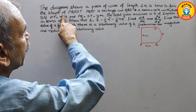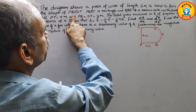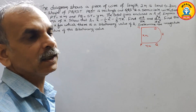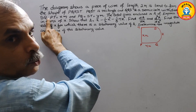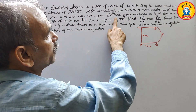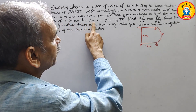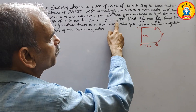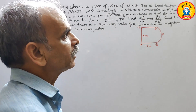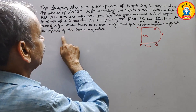The question states: a piece of wire of length 2 meters is bent to form the shape PQRST. PQST is a rectangle, QRS is a semicircle with diameter SQ. PT is equal to X meters, PQ is equal to ST is equal to Y meters. The total area enclosed is A square meters. Express Y in terms of X. Show that area equals X minus one-half X squared minus one-eighth pi X squared. Find dA/dx and d²A/dx². Find the value of X for which there is a stationary value of A, and determine the magnitude and nature of this stationary value.